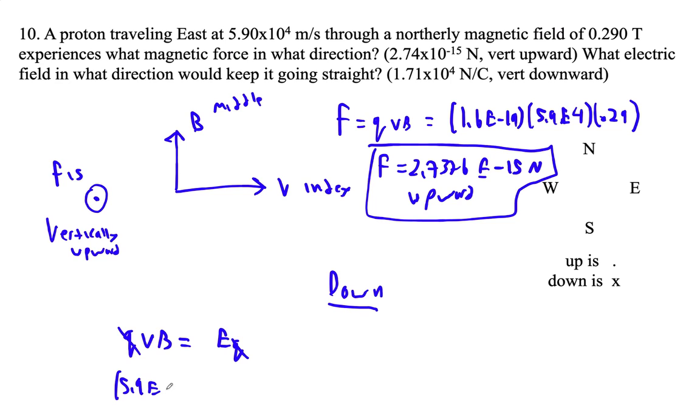5.9 E4, that's our velocity. Our magnetic field is 0.29. And that's going to be our E, so 0.29 times 5.9 E4. And that is 17,110 newtons per coulomb. But we'd write it as 1.71 times 10 to the 4. Vertically downward.